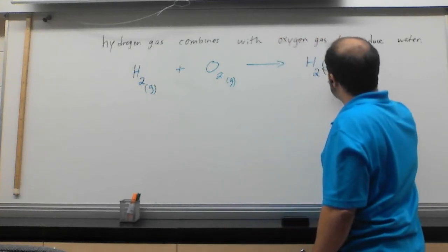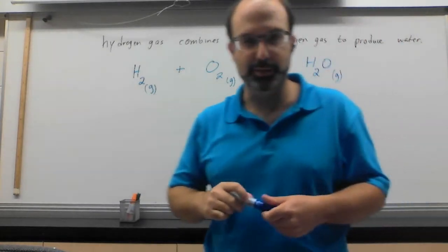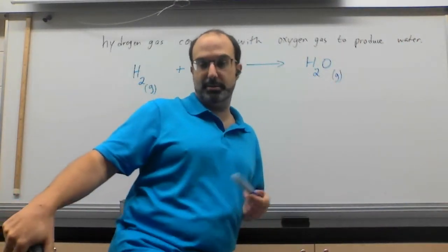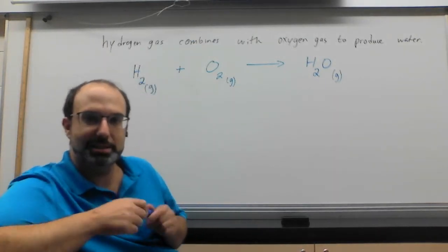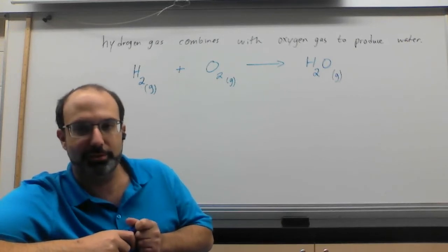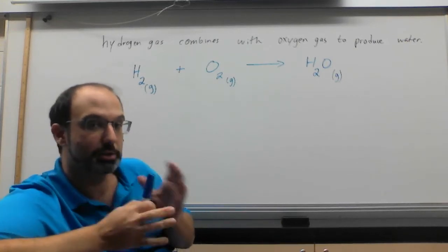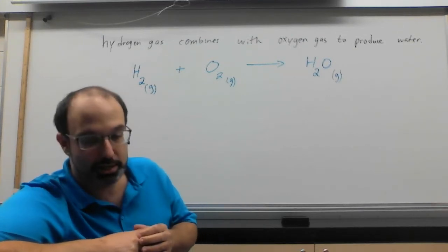The next thing we can do is that combined can be put with a plus sign, with oxygen gas O2, which is also a gas, and it will produce, we use an arrow. In the case of math class, usually you'd use an equal sign, but there's a big difference because an equal sign means that the left and the right are the same. An arrow means that this side becomes this side. That's why we use an arrow instead of an equal sign, at least for now. Water is H2O.